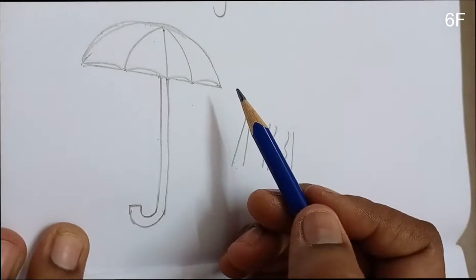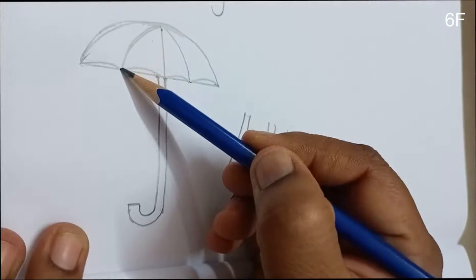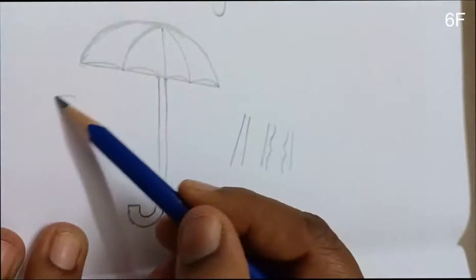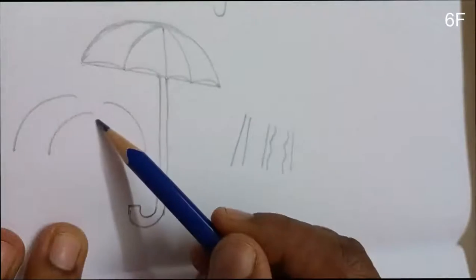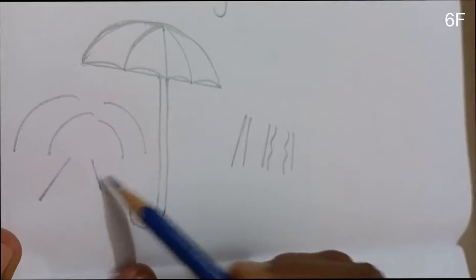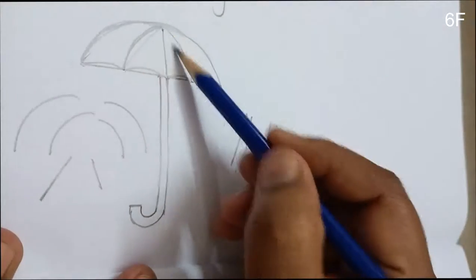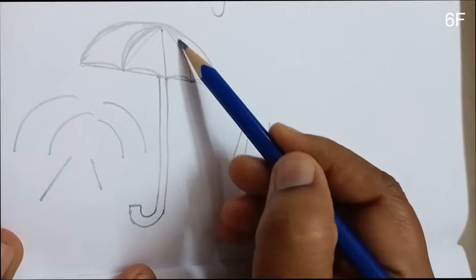This umbrella - see, this curve is bending towards this side because it's bending like this. This side is bending like this, so it should bend like this. Don't draw slanting lines. Some people will draw like this, but no, it should curve.